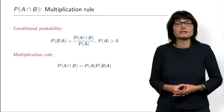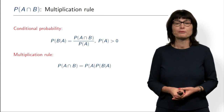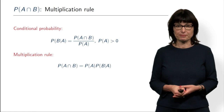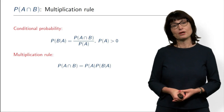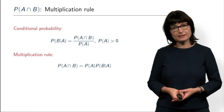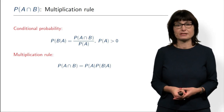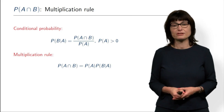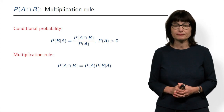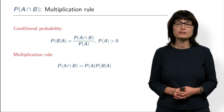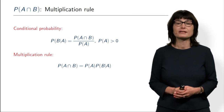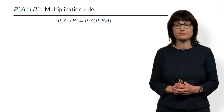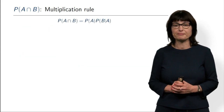This is very logical. What do you need for events A and B to happen together? Well, first A should happen, and then given that A already happened, B should happen. So it is a very logical formula. Of course, this formula extends to more events. Let's look at a simple example.